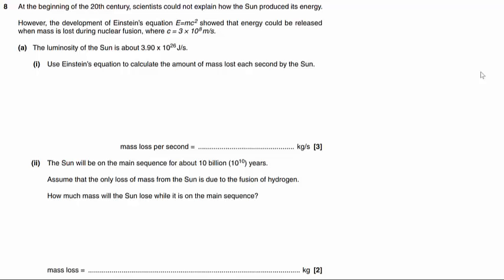Question A tells us that the luminosity of the sun is about 3.9 times 10 to the power of 26 joules per second. Use Einstein's equation to calculate the amount of mass lost each second by the sun.